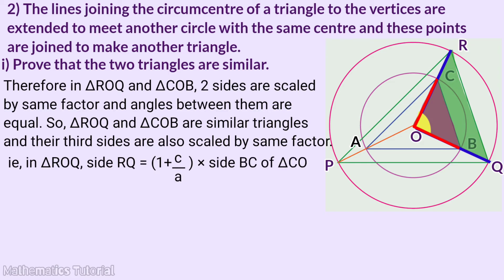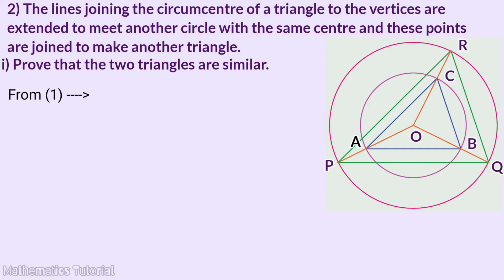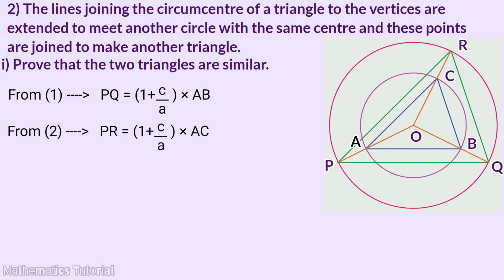Triangle ROQ side RQ is equal to 1 plus C by A into side BC of triangle COB. That is, RQ is equal to 1 plus C by A into BC. This is equation 3. So: equation 1: PQ equals 1 plus C by A into AB. Equation 2: PR equals 1 plus C by A into AC. Equation 3: RQ equals 1 plus C by A into BC.